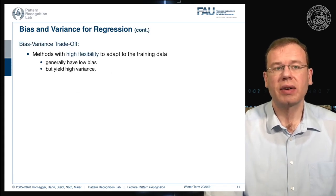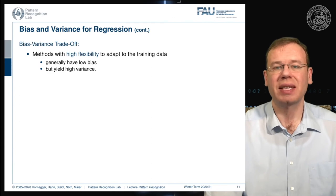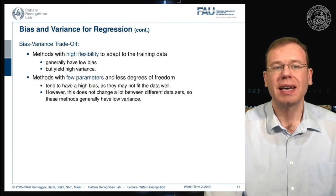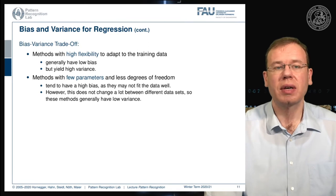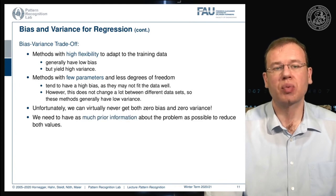This leads to the bias-variance trade-off. Methods with high flexibility try to adapt to the training data and generally have very low bias, but they generate high variance. Methods with fewer parameters and less degrees of freedom tend to have high bias and may not fit the data as well; however, their behavior does not change much across different data sets, so they generally have low variance. Unfortunately, we can virtually never get both bias and variance to zero, so we need to include as much prior information as possible to reduce both.